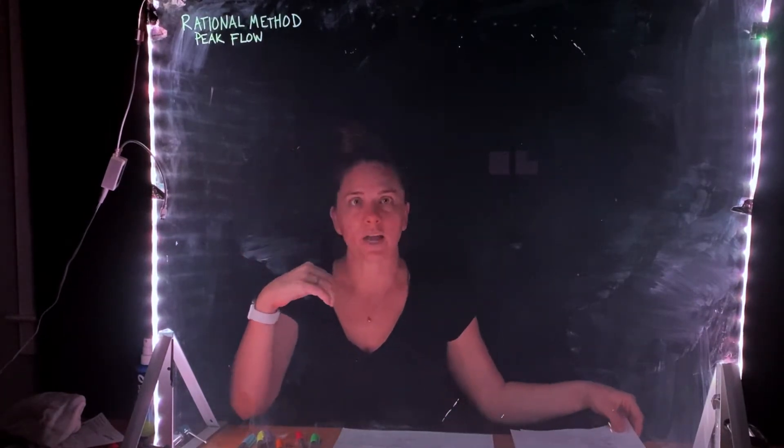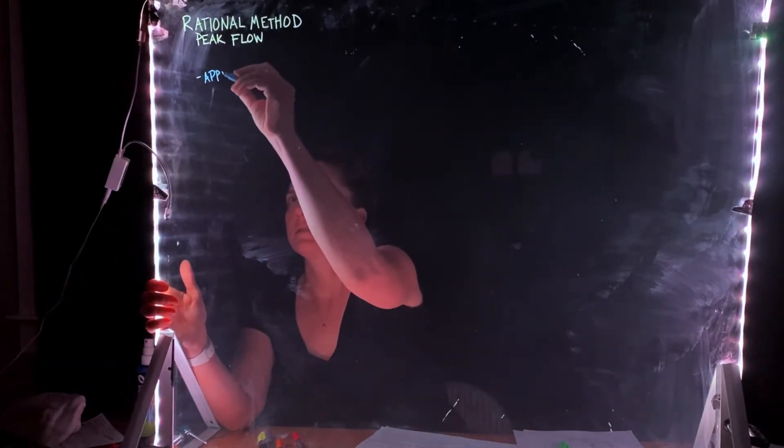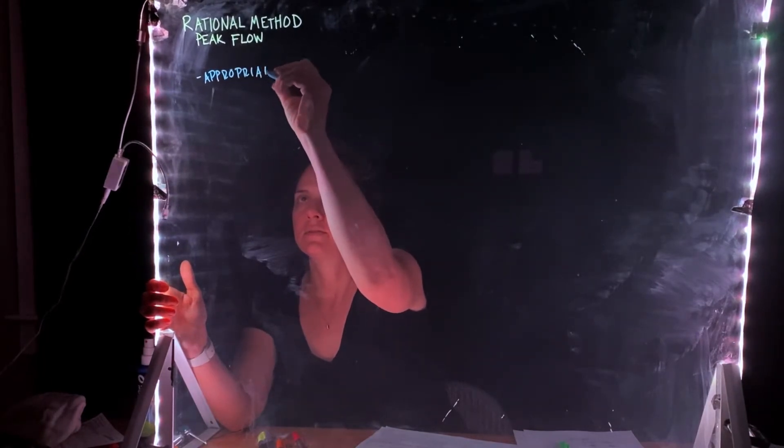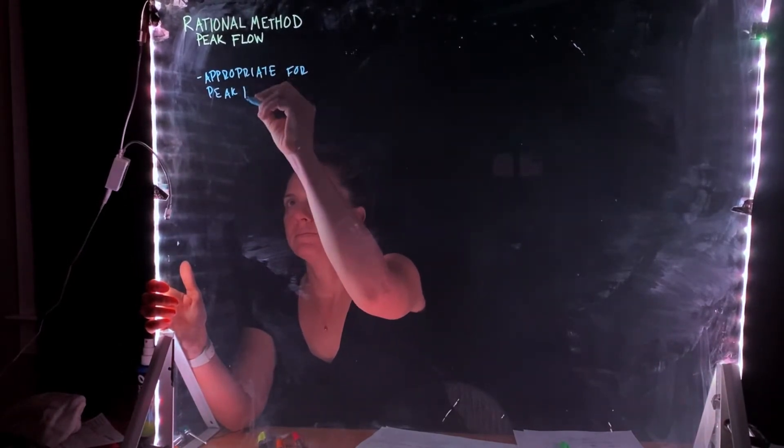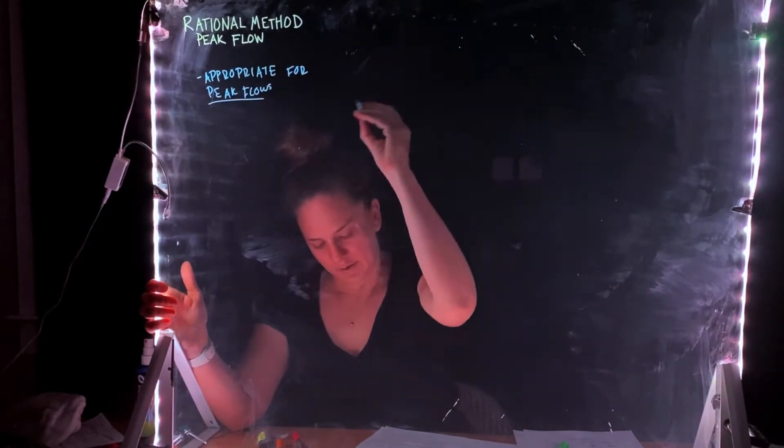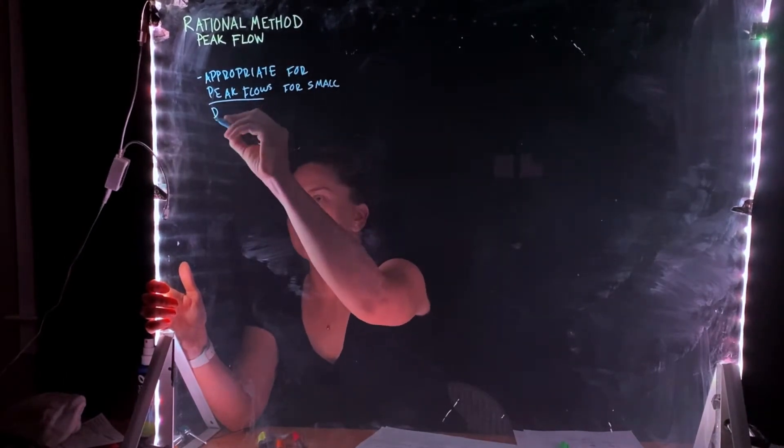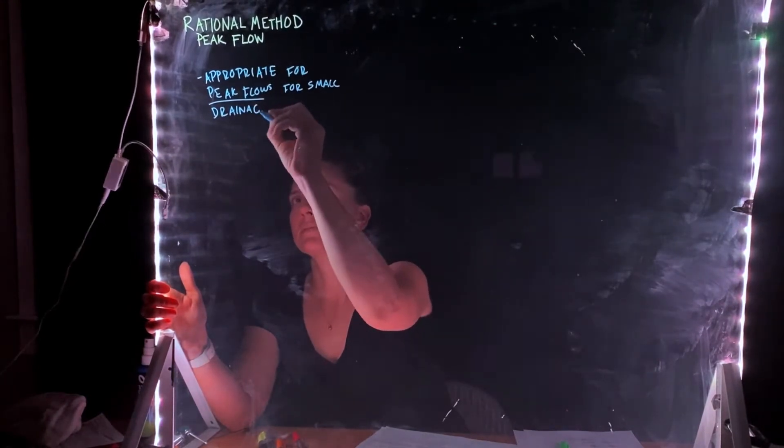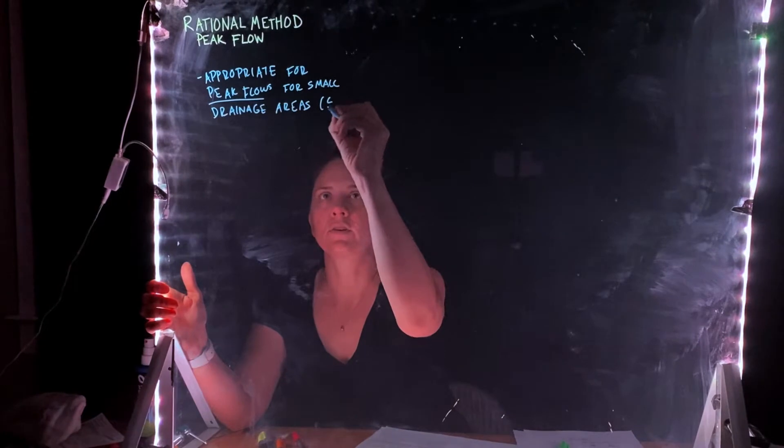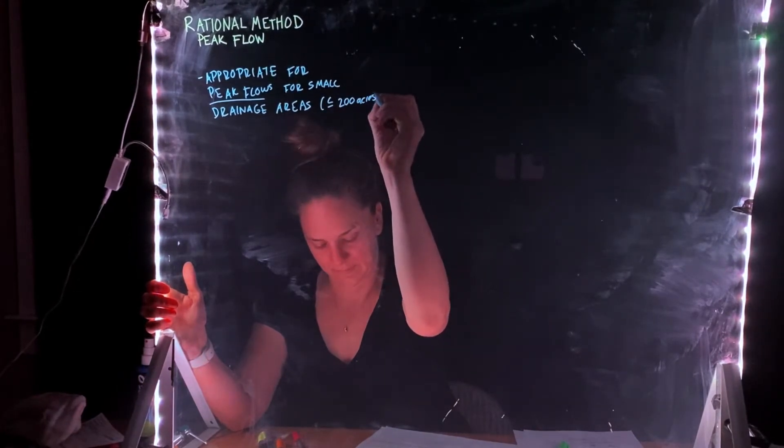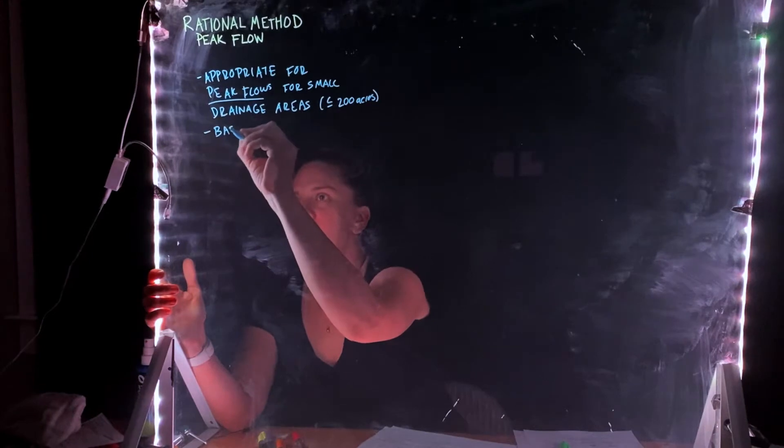So what is the rational method? It's used for peak flows. This method is appropriate for peak flows for small drainage areas. Usually this is on the order of anything less than 200 acres. And we really also consider the rational method for basins without storage.